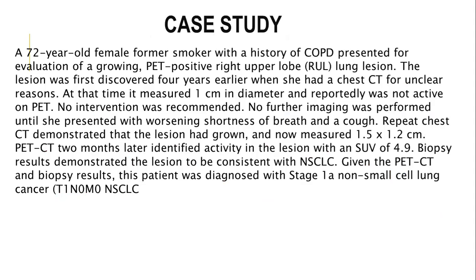Case study: a 72-year-old female, former smoker with a history of COPD, presented for evaluation of a growing PET-positive right upper lobe lung lesion. The lesion was first discovered four years earlier on a chest CT, measuring one centimeter in diameter and not active on PET at that time. No intervention was recommended and no further imaging was performed until she presented with worsening shortness of breath and cough. Repeated chest CT demonstrated the lesion had grown to 1.5 by 1.2 centimeters, and a subsequent PET CT identified activity in the lesion with an SUV of 4.9. Biopsy results confirmed NSCLC.